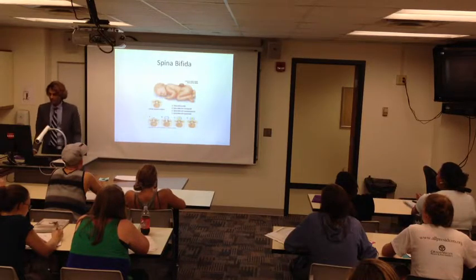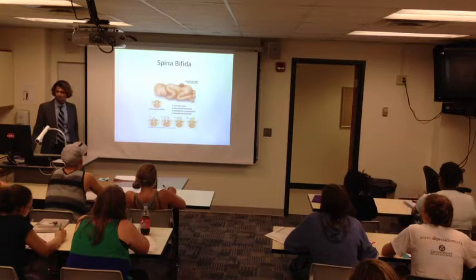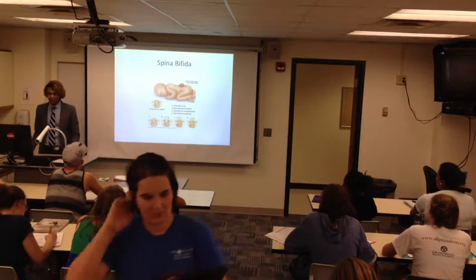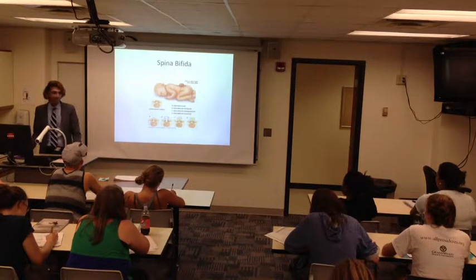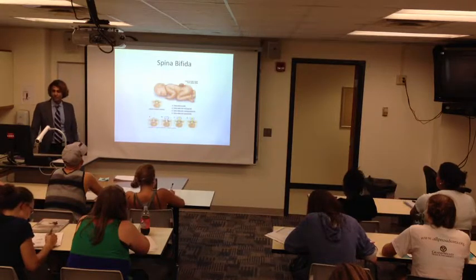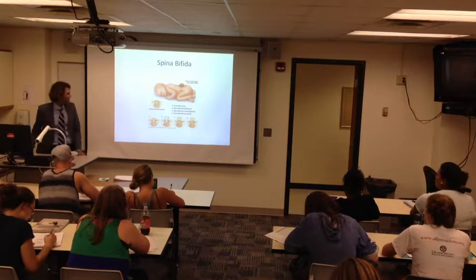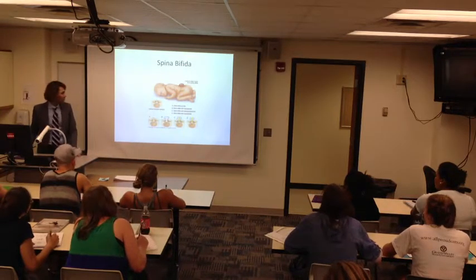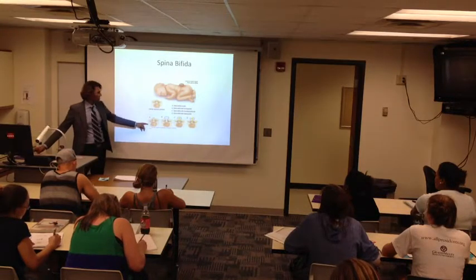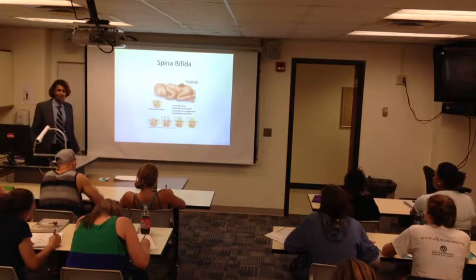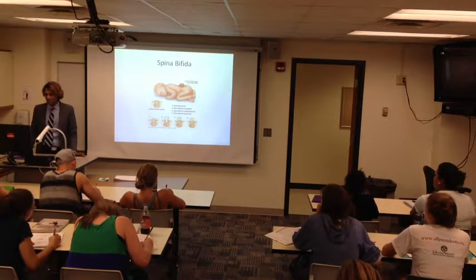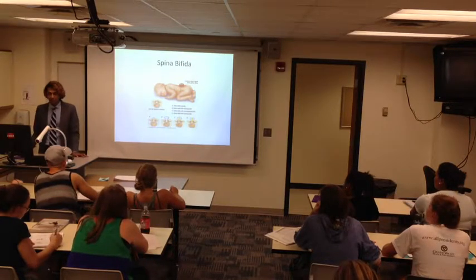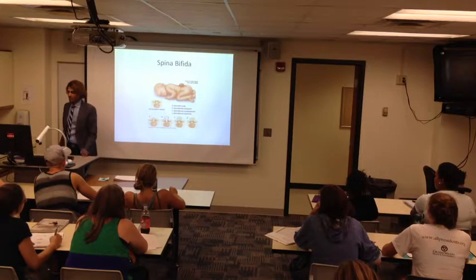Briefly on developmental disorders: spina bifida is a common one to be aware of. It involves failure of closure of the spinal column that can affect the spinal cord. The most innocuous form is spina bifida occulta — 'occulta' meaning hidden. You can go through much of your life not knowing you have it; often the only physical sign is a small hairy patch of skin on the back where the spine is affected. It can be relatively asymptomatic.